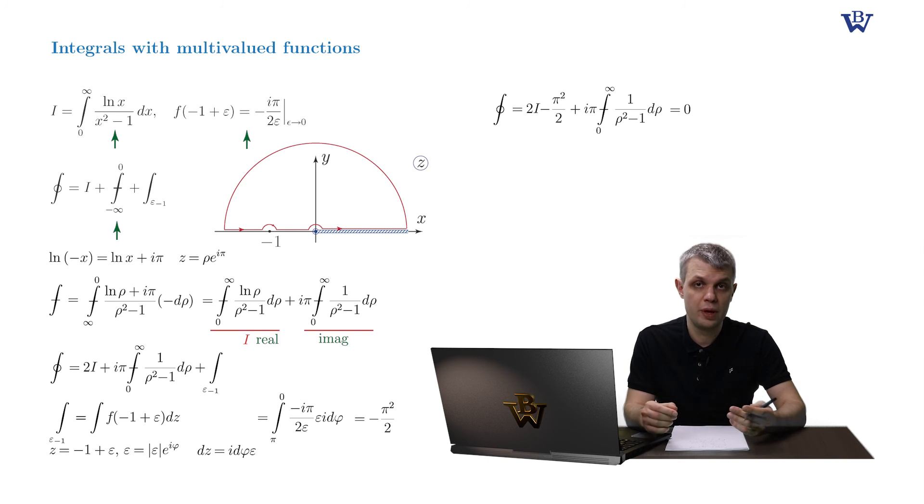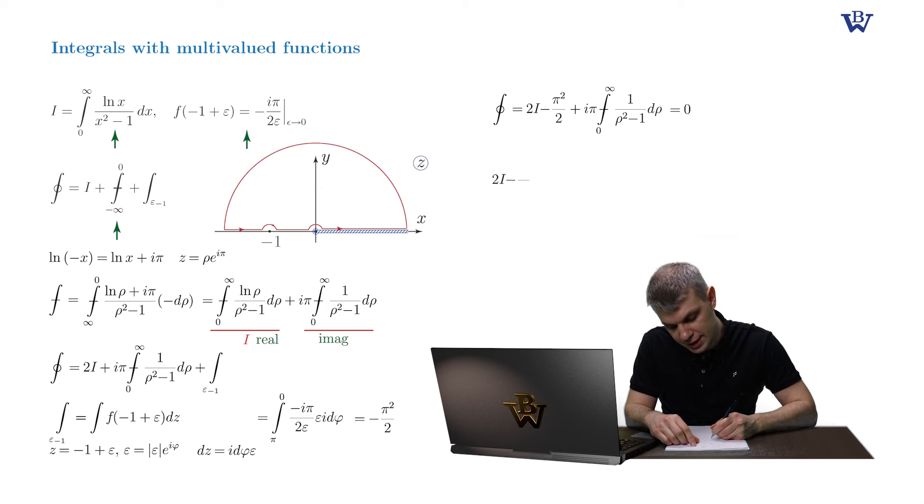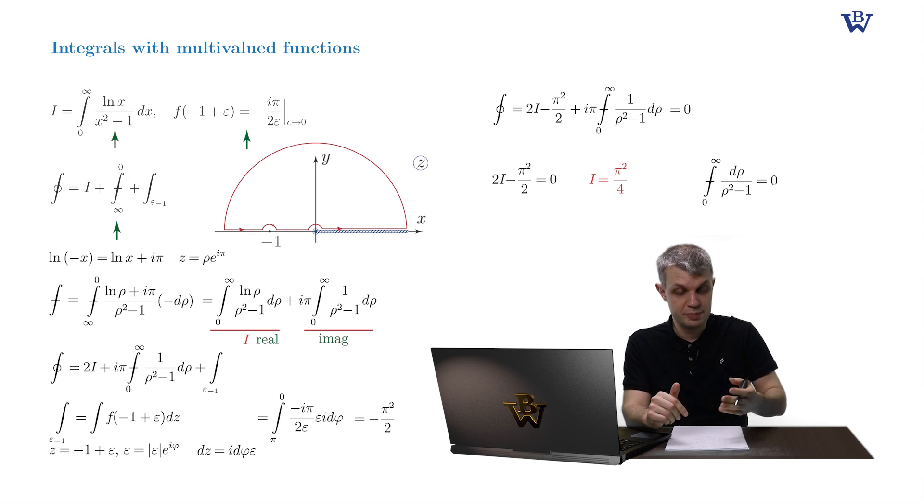And that's it. We are done. The real part of the left hand side, 2I minus π squared by 2, is equal to zero, which yields our original integral I is equal to π squared by 4. While the imaginary part gives us the remainder term as a bonus. So in fact, our principal value integral surprisingly is equal to zero.